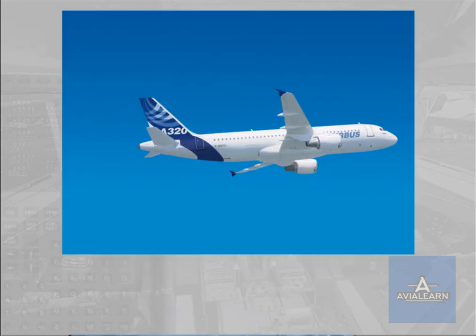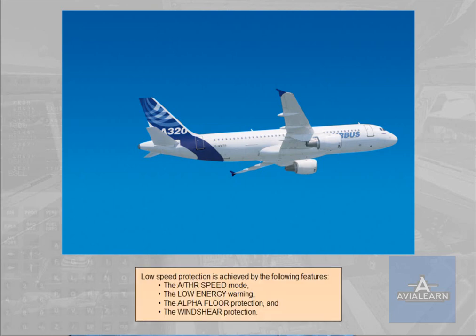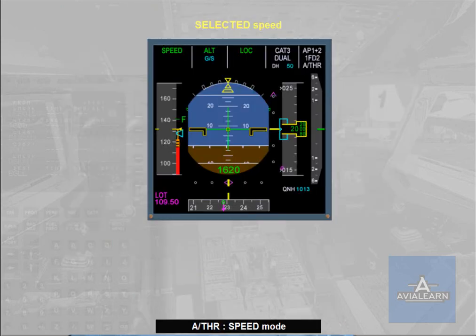Low speed protection is achieved by the following features: the autothrust speed mode, the low energy warning, the alpha floor protection, and the wind shear protection. When the autothrust is on and in speed mode, if the speed target is selected by the pilot on the FCU and the speed target is below VLS, the autothrust will not allow the speed to decrease below VLS.